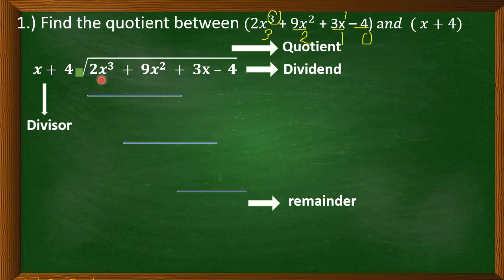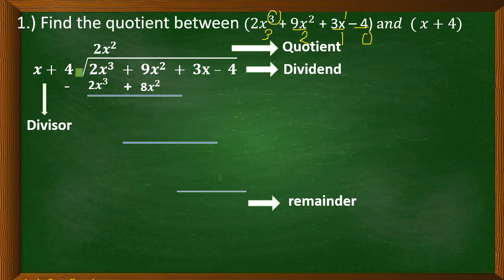Now, we write the dividend inside the long division symbol and the divisor outside. Consider only the first term of the dividend and the first term of the divisor: 2x cubed divided by x equals 2x squared. Multiply: 2x squared times x equals 2x cubed, and 2x squared times positive 4 equals positive 8x squared. Then subtract — change the sign of every term in the subtrahend: positive 2x cubed becomes negative 2x cubed and positive 8x squared becomes negative 8x squared. Proceed to addition: 2x cubed plus negative 2x cubed equals 0, and 9x squared plus negative 8x squared equals x squared.